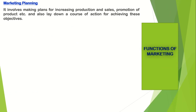The next function is marketing planning. It involves making plans for increasing production and sales, promotion of products, and laying down a clear course of action for achieving these objectives. For example, if a product has become popular in Punjab or one of the North Indian states, the target of the company should be to make it popular in the rest of North India first, followed by the remaining states. This is how plans have to be made in marketing.